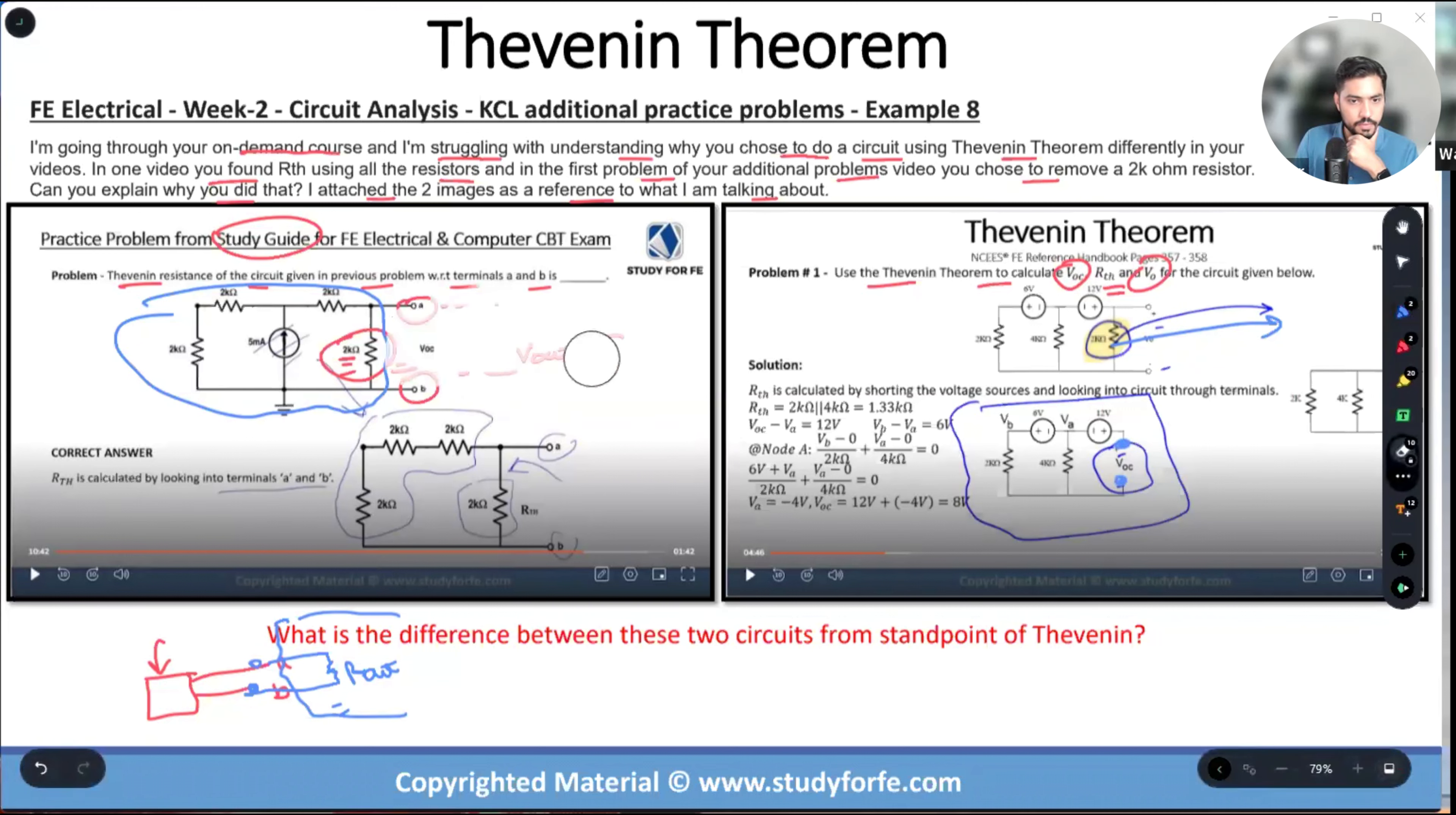The circuit that is circled over here, a and b terminals sticking out, and the rest of the circuit black box is given to you. So everything that is circled over here is basically the circuit that needs to be converted into the Thevenin equivalent.